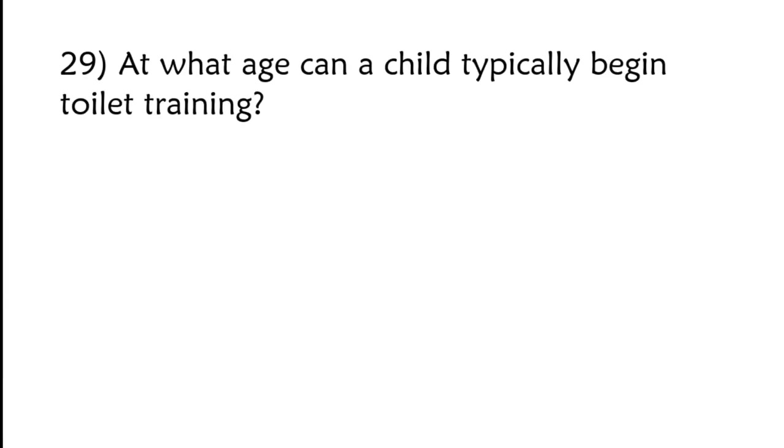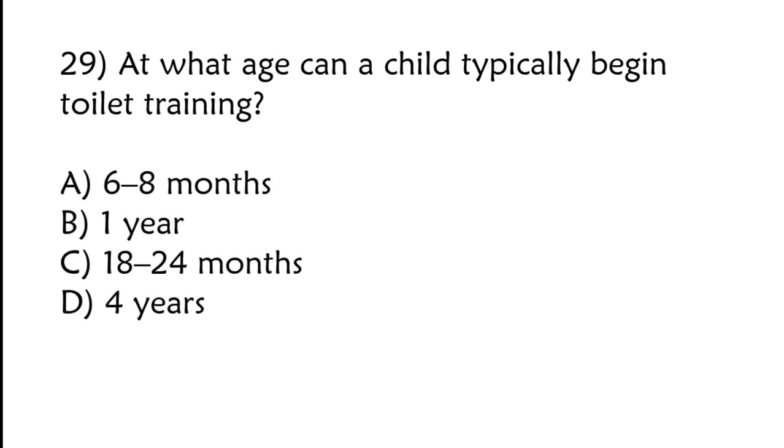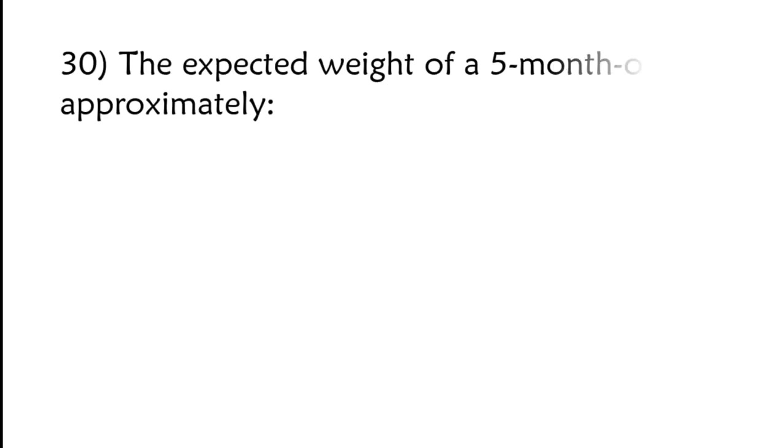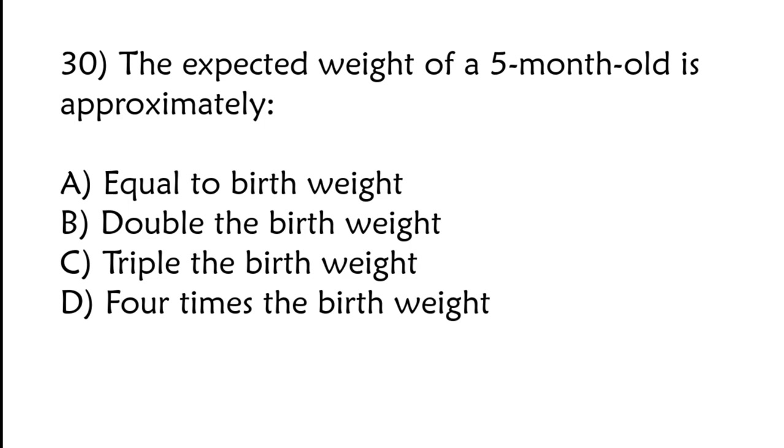At what age can a child typically begin toilet training? 6 to 8 months, 1 year, 18 to 24 months, 4 years. Correct answer is option C, 18 to 24 months. The expected weight of a 5-month-old is approximately equal to birth weight, double the birth weight, triple the birth weight, 4 times the birth weight. Correct answer is option B, double the birth weight.